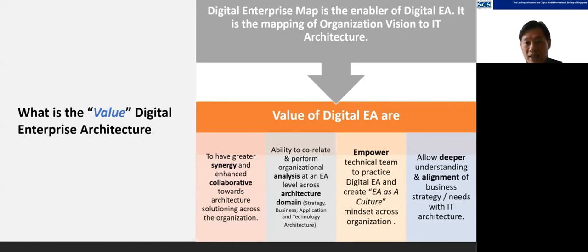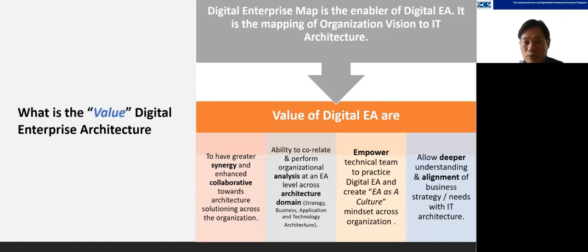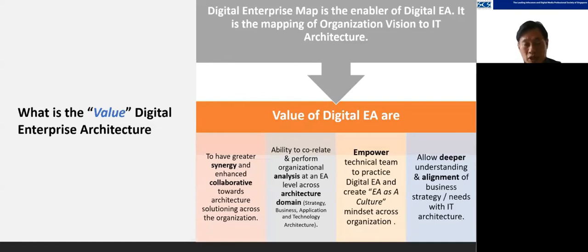Lastly, digital EA also allows a deeper understanding and alignment of business strategy needs with IT architecture. Earlier I gave the example that IT and business were going in different directions. By mapping them together in a single tool holistically and seeing the impact, we're able to move in a certain direction together with the business, ensuring alignment. If there's a change in business strategy, we can quickly innovate our IT strategy to change together. That is a very strong value — and also one of the biggest gaps that exists between business and IT in organizations today.